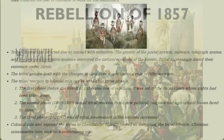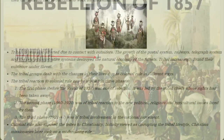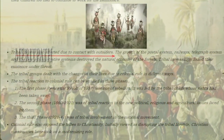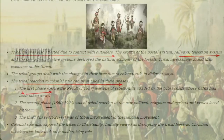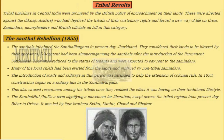The tribal life was also affected by contact with outsiders, through the growth of the postal system, the railway system, and the telegraph system. The tribal reaction to colonial rule was studied in three phases — the first phase, the second phase, and the third phase — which we are going to discuss in the next slides.